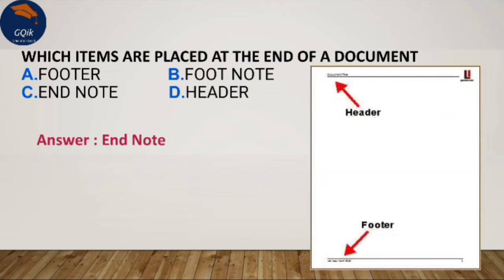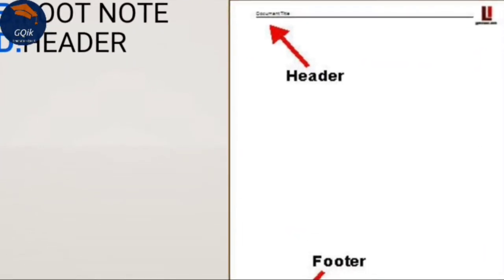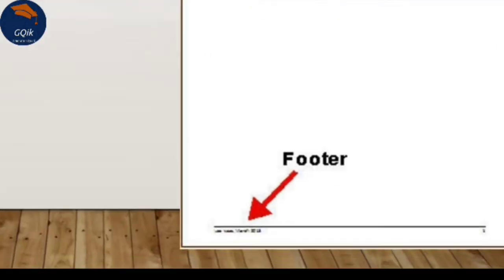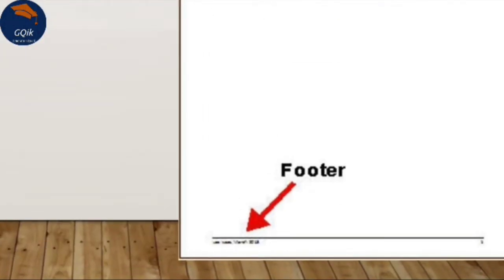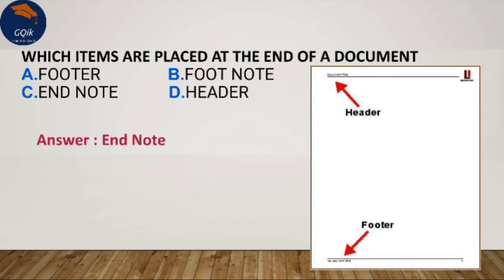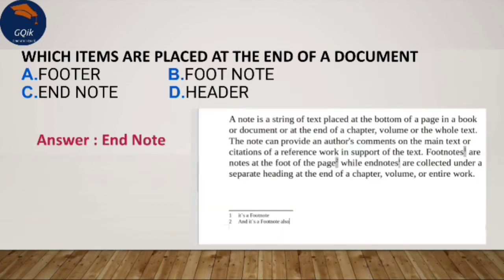The header and footer are not placed at the end. The header is at the top margin, and the footer is at the bottom margin. For example, in magazines, the content repeated on top or bottom of every page uses header and footer. The endnote and footnote are different — this is the endnote.